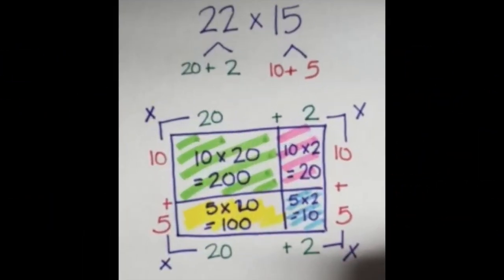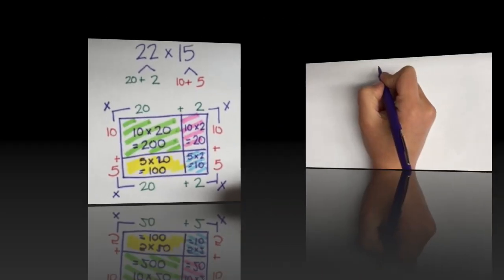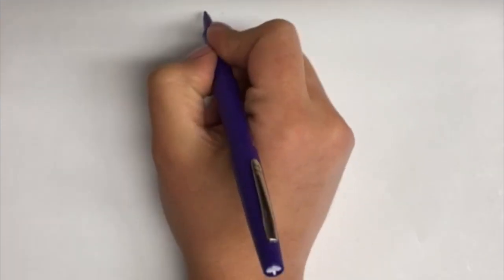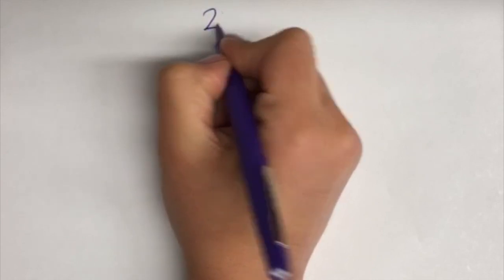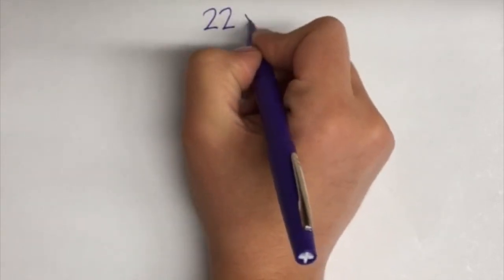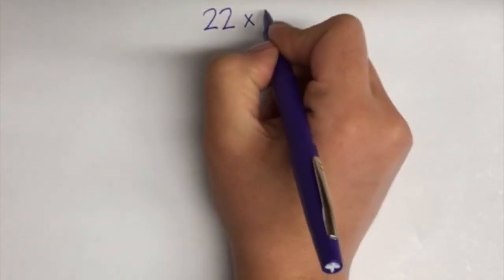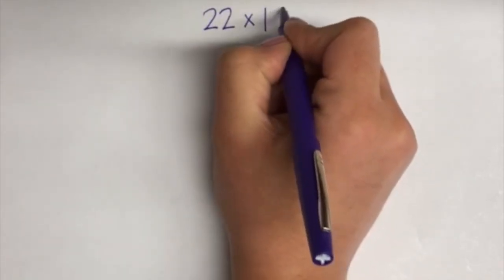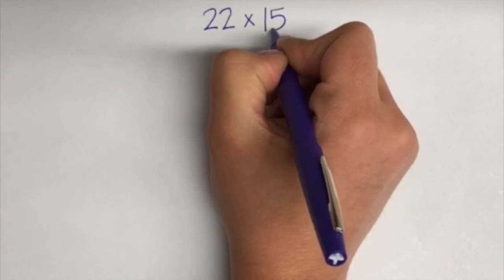In today's video, I'm going to show you how you can multiply 22 times 15 using the area model. The area model is a great strategy to help you simplify a double digit multiplication problem.